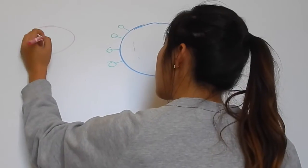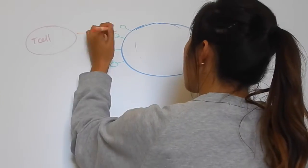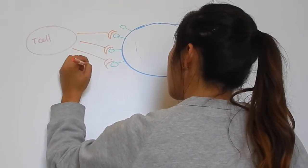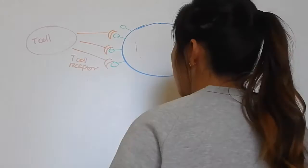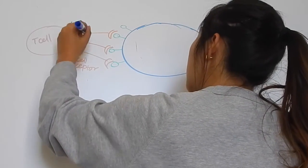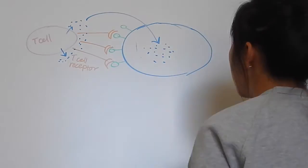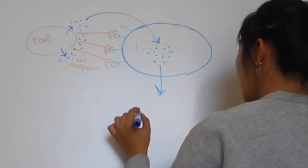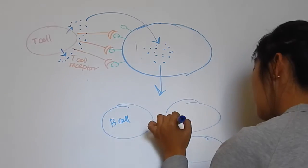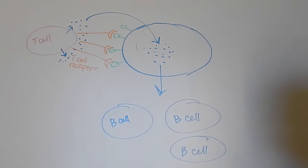Again, the corresponding T cell will bind to the antigen-presenting cell and releases cytokines. The cytokines stimulate the B cell to duplicate and differentiate into plasma cells.